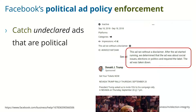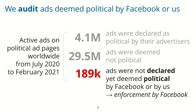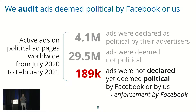Detected ads are also added to the publicly available archive of all political ads. Our audit used all active ads by pages that published at least one political ad during our measurement period of over half a year — a period which included the 2020 U.S. and Brazil elections. Most of these ads were not interesting to us because they were either properly declared by the advertiser or not political in nature at all. We focused on the 189,000 ads that were not properly declared by the advertiser but that either Facebook or we determined to actually be political.